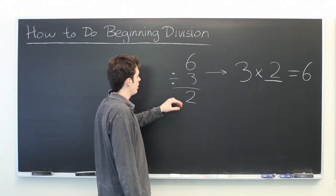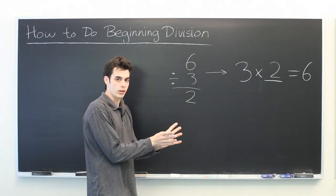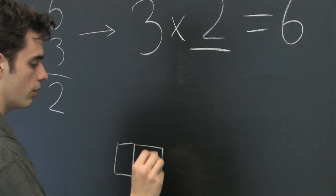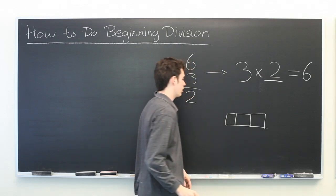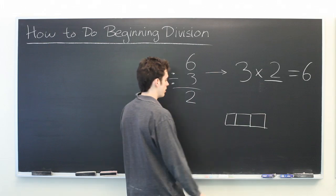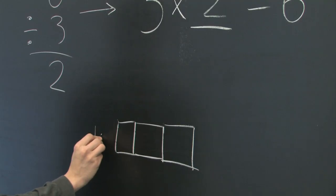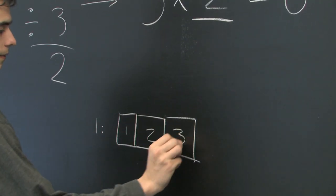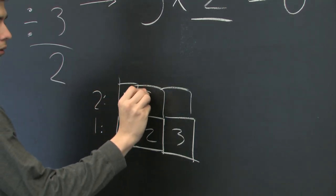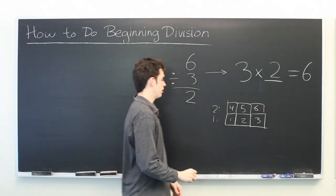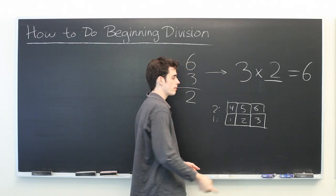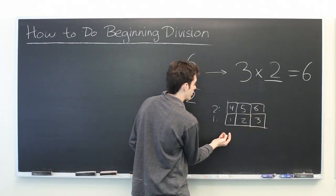Alternatively, you can think of 3 as a unit or a set of blocks. So you've got a little set of 3 blocks. How many times would you need to stack this on top of itself in order to get 6? Here's 1, 2, 3. Here's 4, 5, 6. So there — 3 times 2 is 6, or 6 divided by 3 is 2.